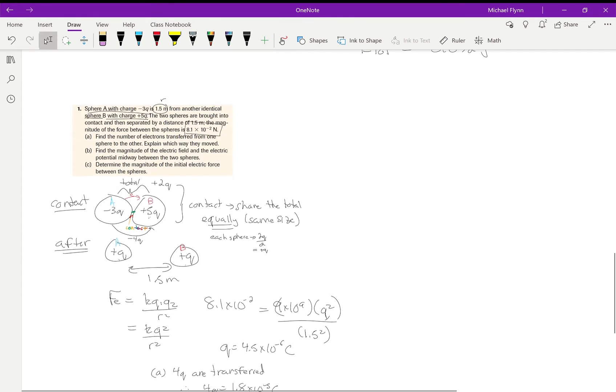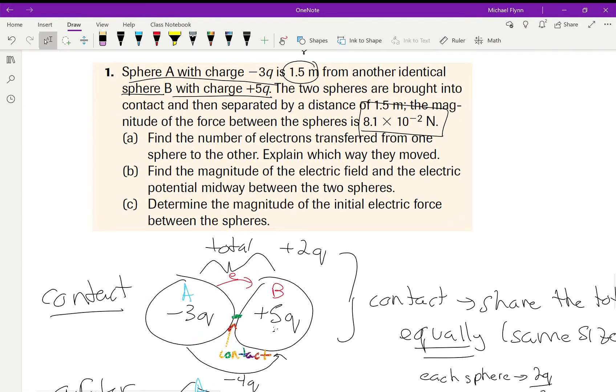But you know what, they're so small and insignificant that this kind of thing is kind of normal. Now it says find the magnitude of the electric field and the electric potential midway between the two spheres. I assume they mean after they touch. This one's easy—the electric field will be zero between the two spheres.